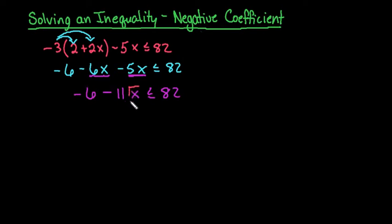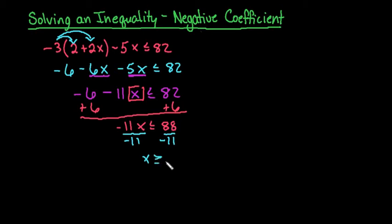We still don't have x completely by itself, remember that's our goal, so we're going to add 6 to both sides. So with this we end up with negative 11x is less than or equal to 88. And when we get to this point, remember when we divide by a negative we have to switch the sign. So when I switch the sign, this becomes x is greater than or equal to negative 8.